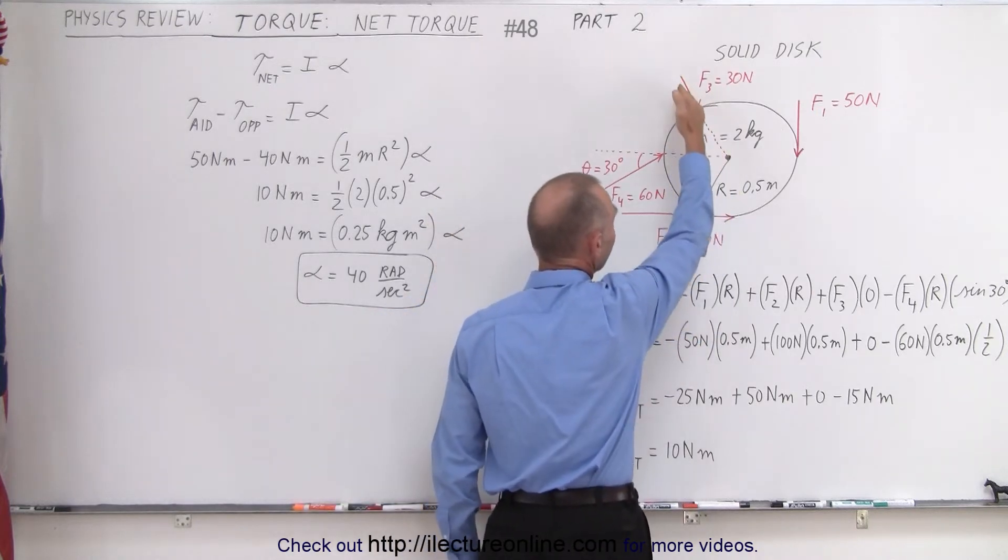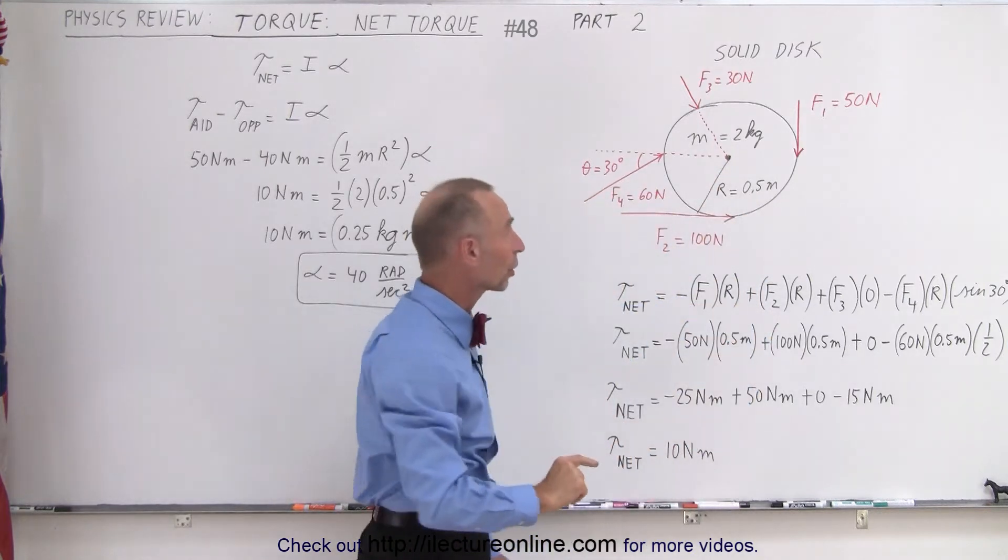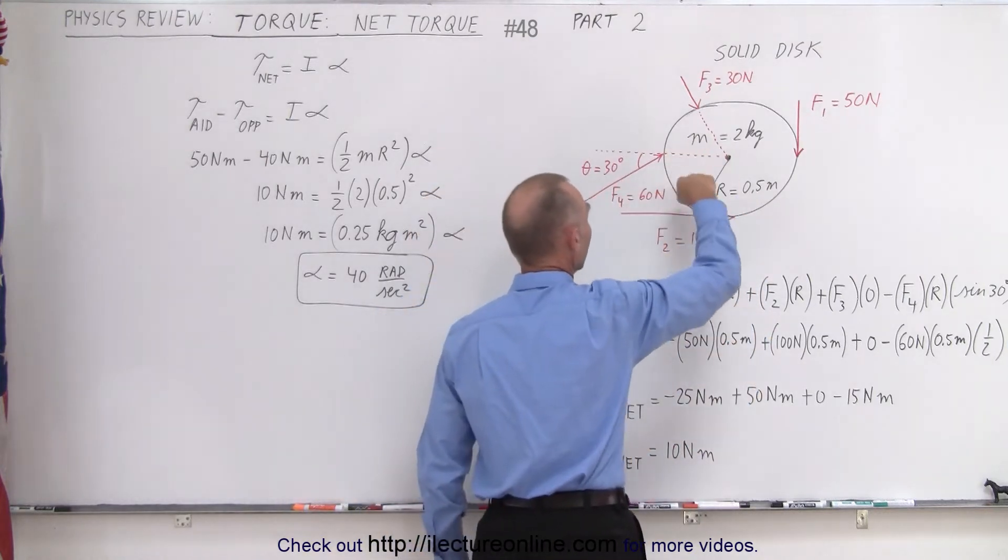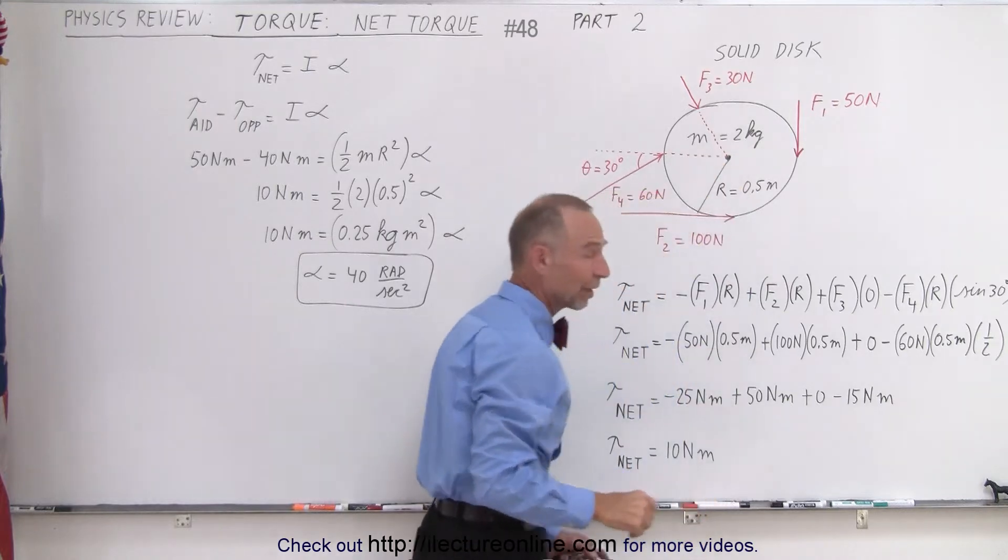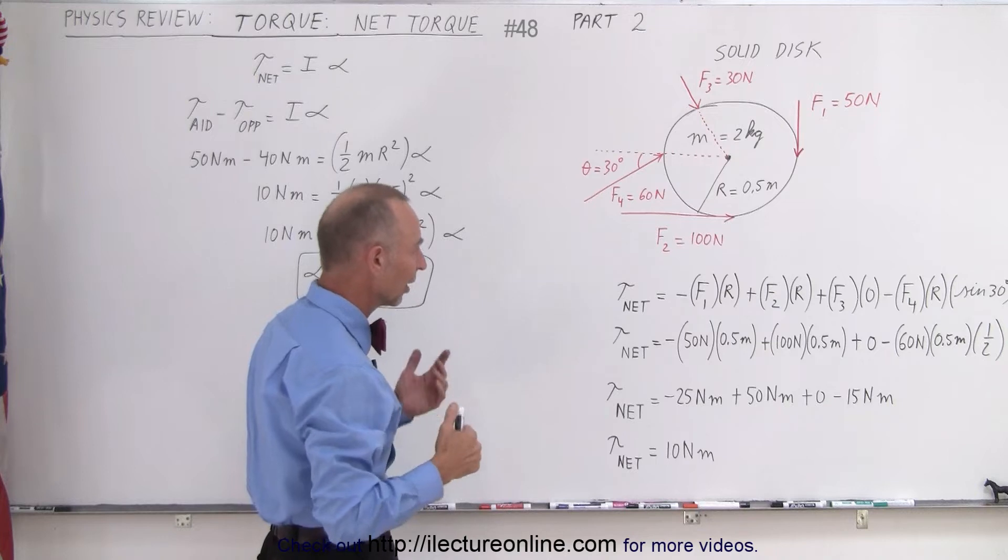This force, the line of action goes right through the point of rotation, so it causes no torque. And this force right here would cause the object, the disc, to rotate in a clockwise direction, so that would give you a negative torque. So that takes care of the signs.